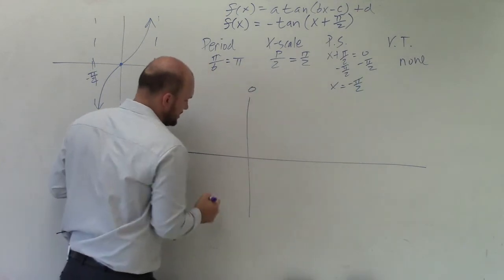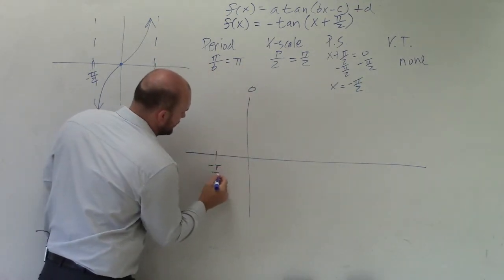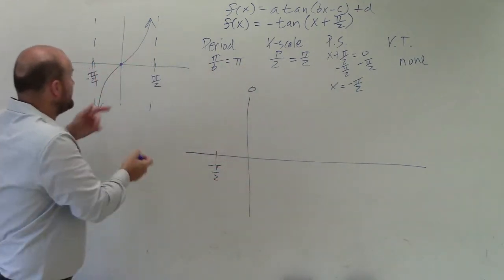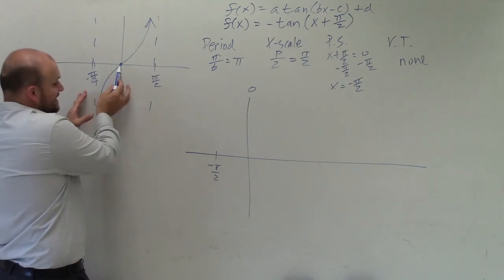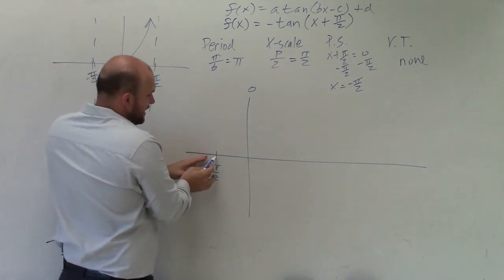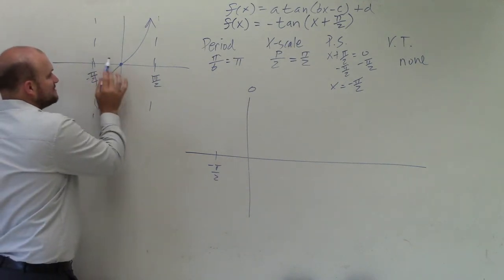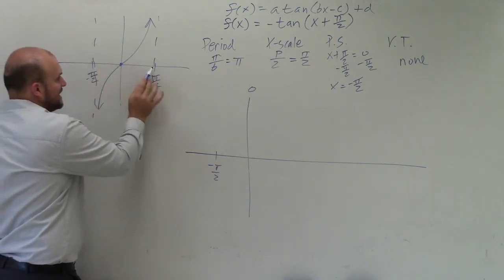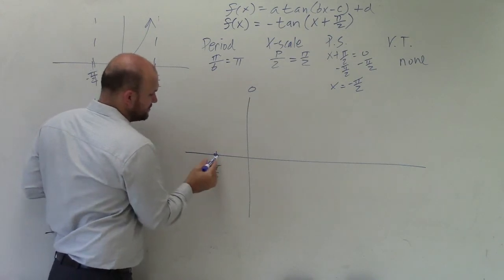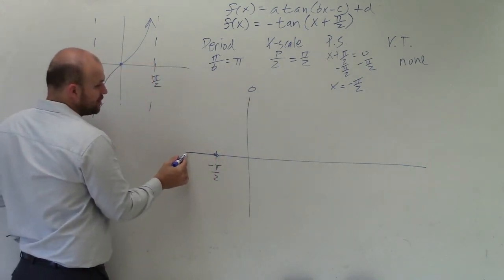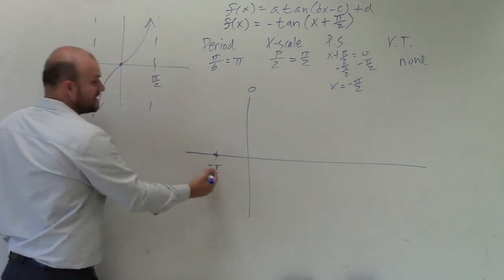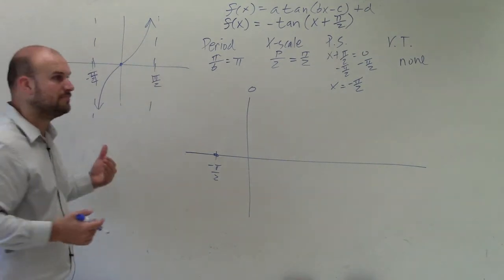So let's pretend here's 0 and here's negative pi over 2. Well, what I'm going to do is pretty much recreate this graph instead of at 0, at its phase shift of negative pi over 2. Now remember, the x scale is the distance from each asymptote to x intercept to an asymptote. So to go to my next asymptote to the left, I'm just going to move over another pi halves,